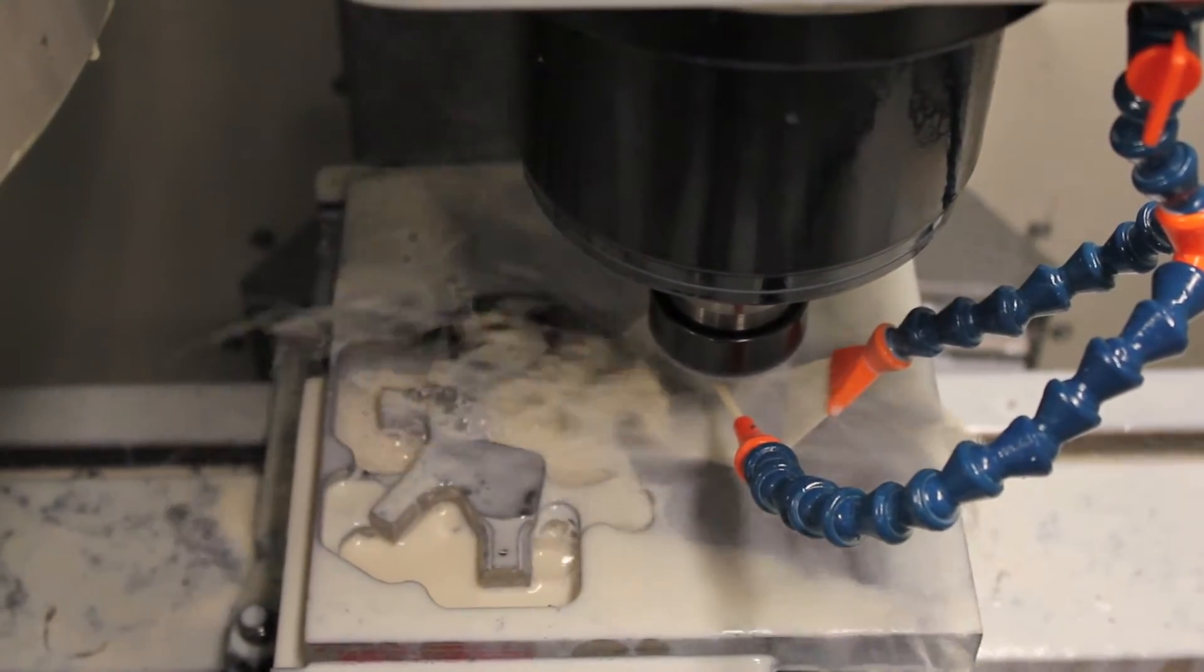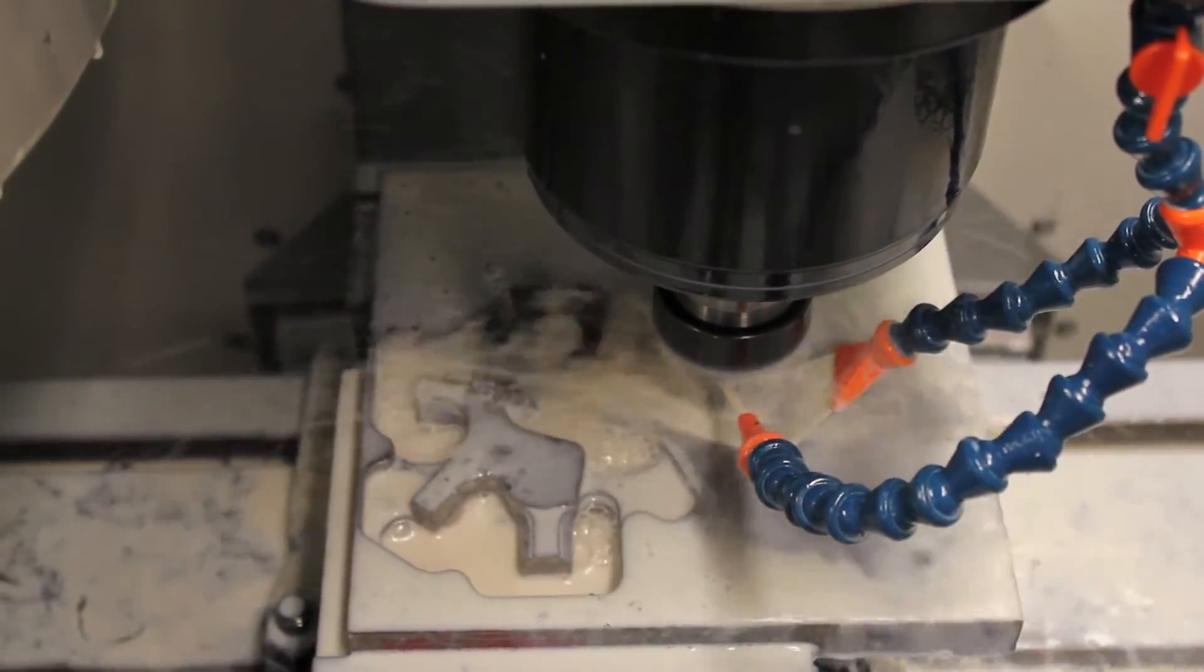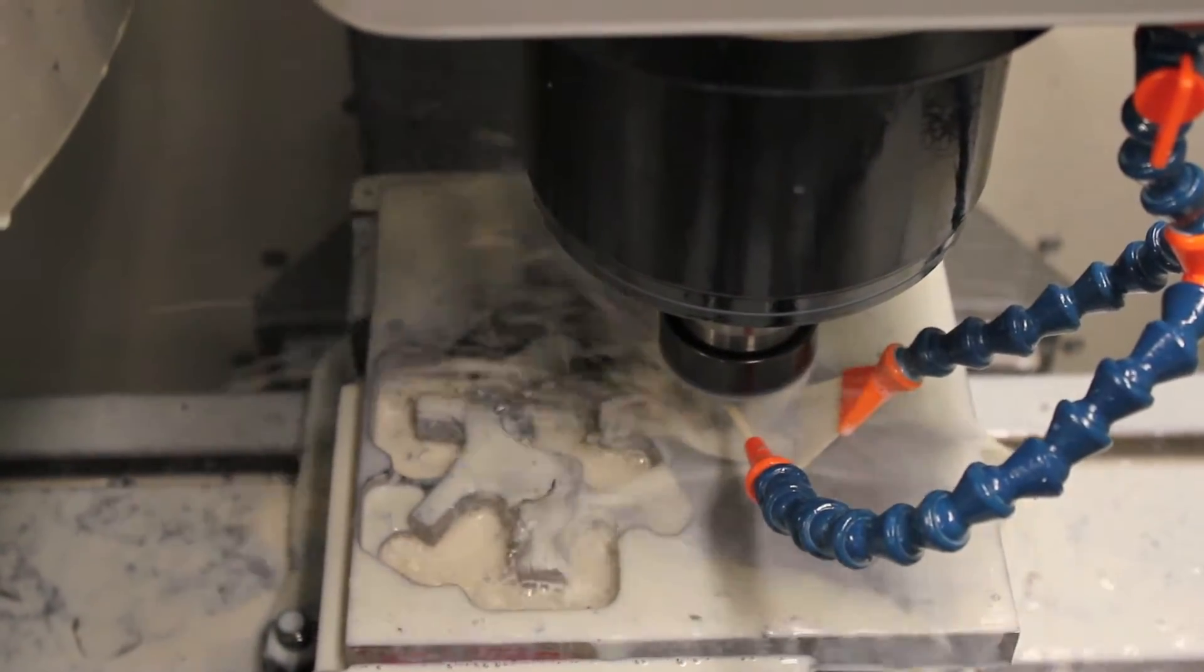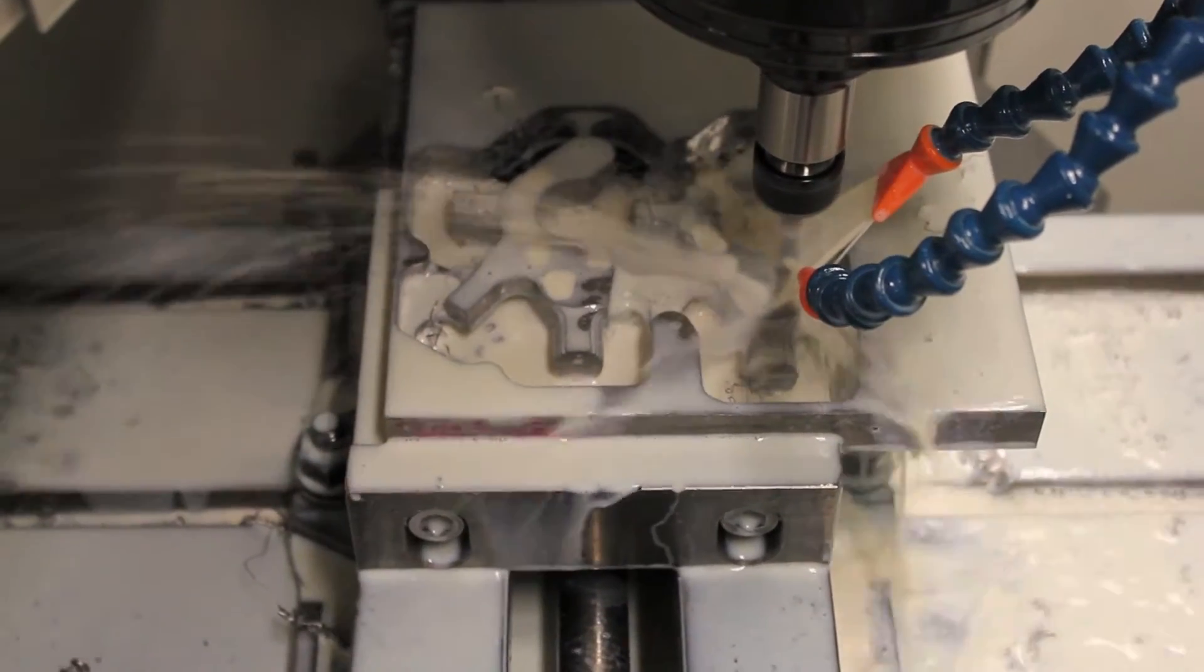As you can see, we used tabs around the edges to hold the part into the material, which were later removed with a bandsaw and sanded smooth.